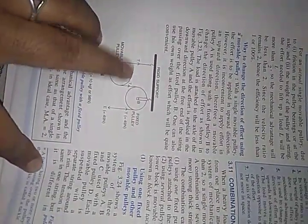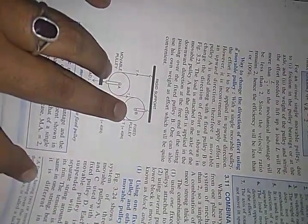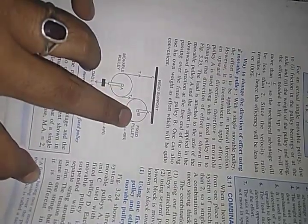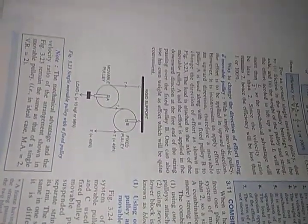The next topic is ways to change the direction of effort. In this combined system — often given in board exams where you must mark the tensions, effort, and identify each pulley — you can clearly see this is a single movable pulley and this is a single fixed pulley. The effort applied equals this tension T, and the load equals all the tensions combined since they all act opposite to the load. This system is used in various types of machines to change the direction of effort.